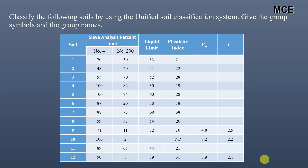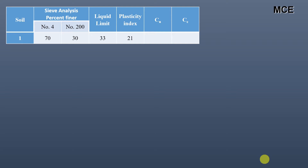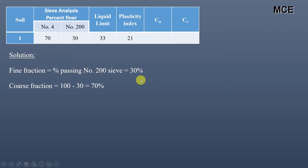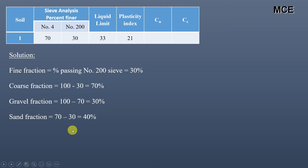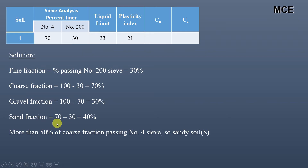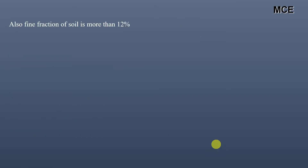We will classify each soil sample one by one. For soil 1, the fine fraction passing sieve number 200 is 30%, coarse fraction is 70%, gravel fraction (coarser than sieve number 4) is 30%, and sand fraction (between sieve 4 and sieve 200) is 40%. The major portion is coarse fraction at 70%, and within that, sand is 40%, so this is a sandy soil — symbol S will be used.